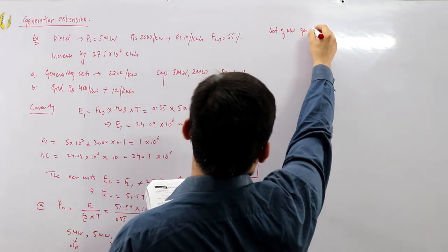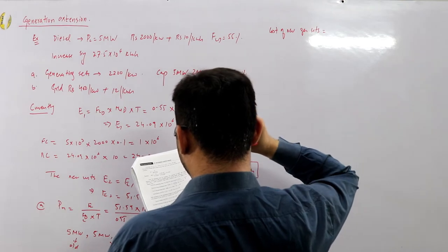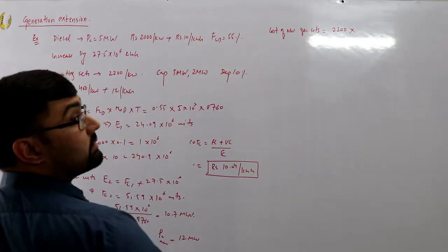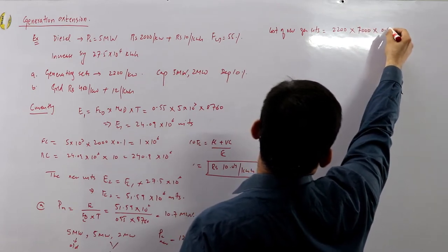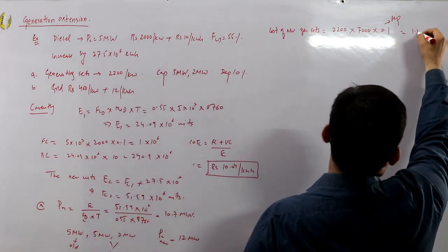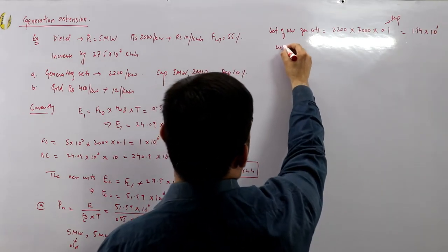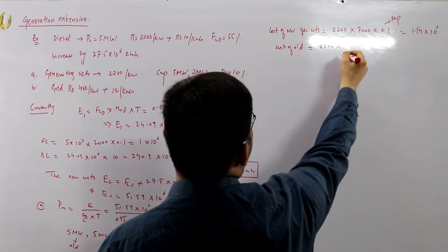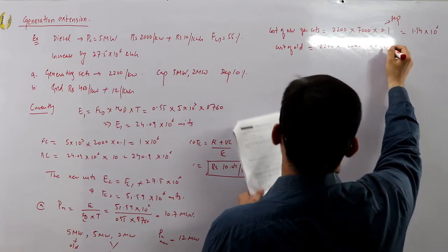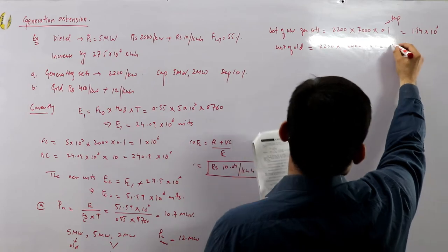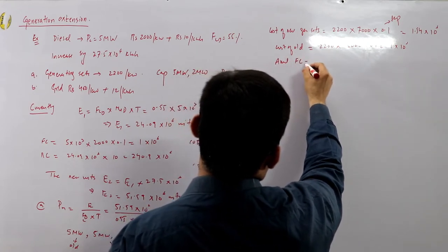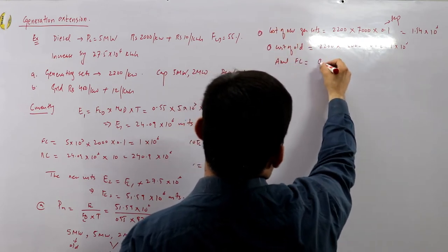Cost of new generating sets = Rs 2200/kW × 7000 kW × 0.1 (depreciation) = Rs 1.54×10⁶. Cost of old generating sets = Rs 2200/kW × 5000 kW × 0.1 = Rs 1×10⁶. Annual fixed cost for Option A = Rs 1.54×10⁶ + Rs 1×10⁶ = Rs 2.54×10⁶.